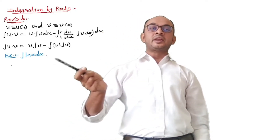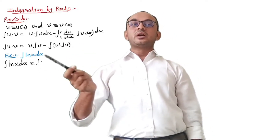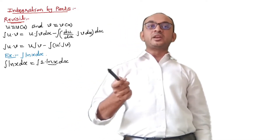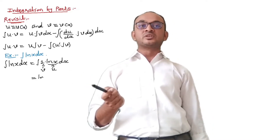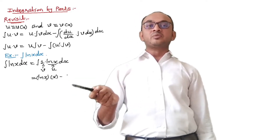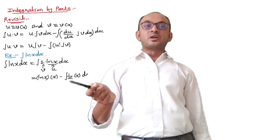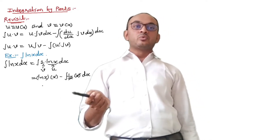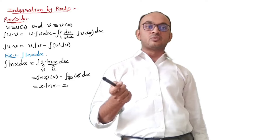Suppose we are given the integral of ln(x) dx. We rewrite it as the integral of 1·ln(x) dx. We set ln(x) as u and 1 as v. Applying the rule of integration by parts, we get ln(x)·x minus the derivative of ln(x), which is 1/x, times the integration of 1, which is x — all integrated.